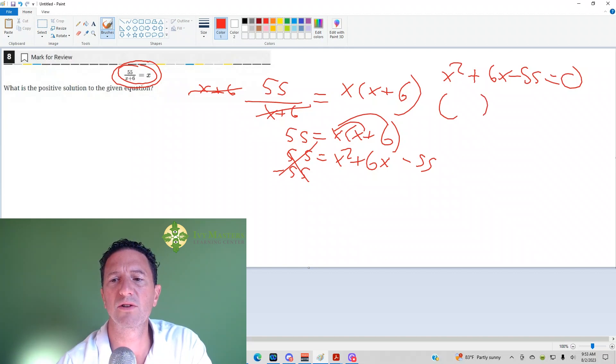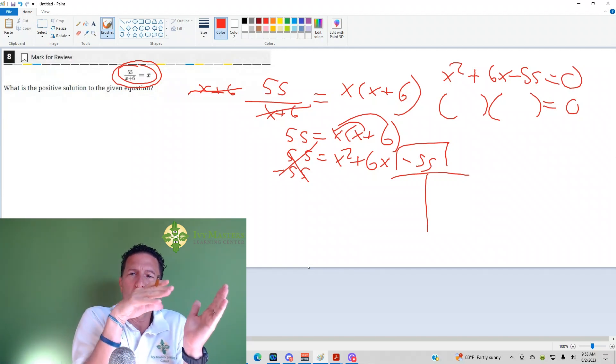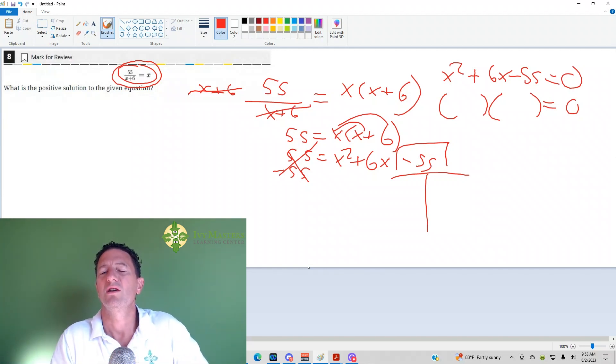I get x squared plus 6x minus 55 equals 0. And so now to factor it, I need two numbers that are going to multiply to give you a negative 55 and add to give you a positive 6. So let's say this 55 over here, I'm going to factor it. Now my bigger number has to be positive, and what I always recommend, don't start with like 1 and 55. Usually if you were to take the square root, it would be a little more than 7 and then work down from there. And so 6 doesn't go in, 5 goes in. How many times does 5 go in? It goes in 11 times.